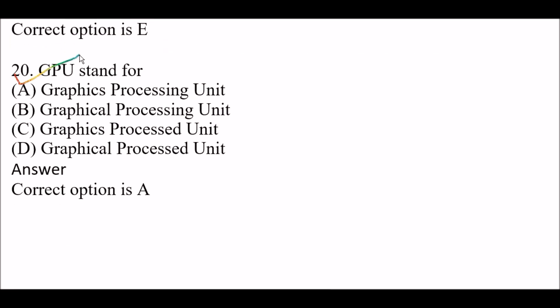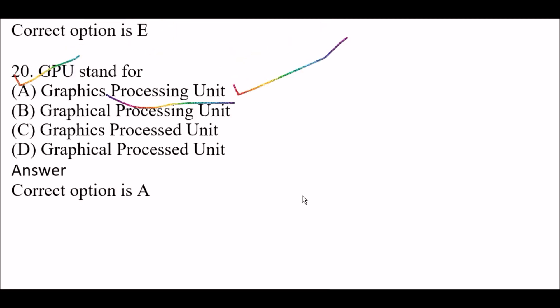Next question: GPU stands for — option A, graphics processing unit; option B, graphical processing unit; option C, graphics processed unit; option D, graphical processed unit. The right answer is option A, graphics processing unit. GPU stands for graphics processing unit.